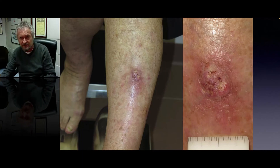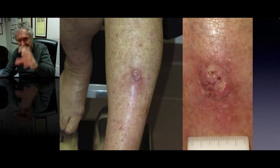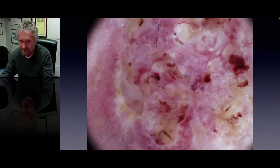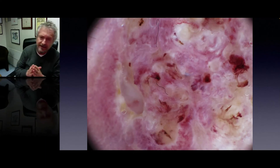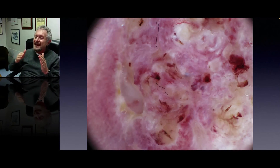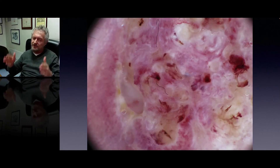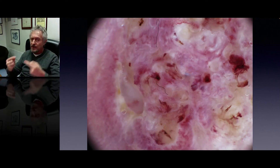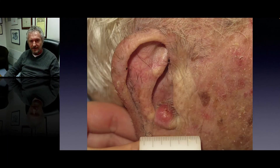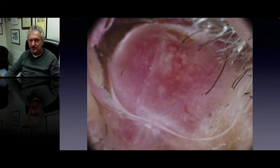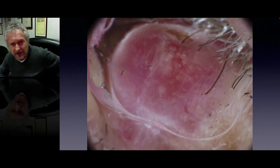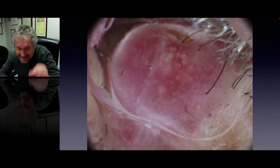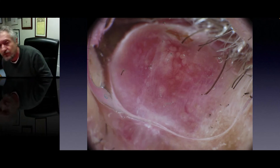Here is another example of a squamous cell carcinoma — a nodule with scales and ulceration clinically — showing a combination of white color but also a lot of red color and polymorphic vessels. When SCC is well differentiated, you have a lot of white color; as you move toward poor differentiation, you see less and less white and much more red. In a poorly differentiated squamous cell carcinoma, white color is not so visible; we see a red tumor with some white circles still present as a clue.